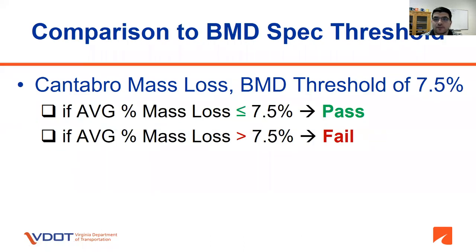Comparison to BMD spec threshold: the Cantabro mass loss BMD threshold in Virginia is recommended to be 7.5 percent for surface mix with A and D designation. If the average percent mass loss is lower than 7.5 percent, the asphalt mixture passes the BMD threshold for Cantabro durability. If the average percent mass loss is greater than 7.5 percent, the asphalt mixture fails the durability BMD threshold.